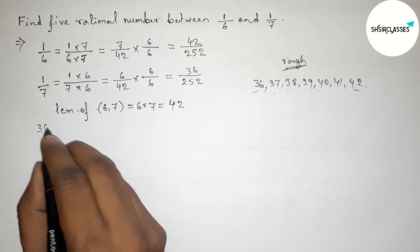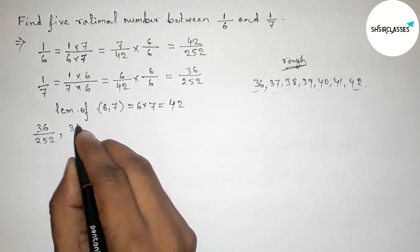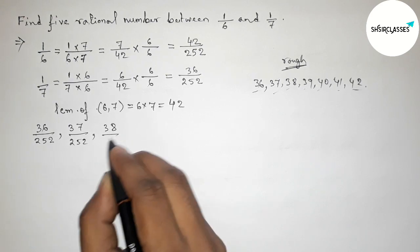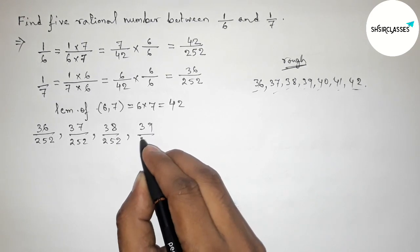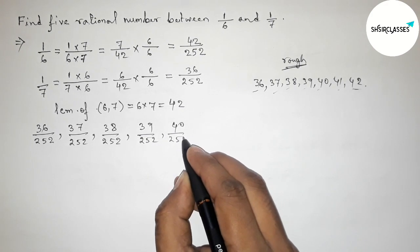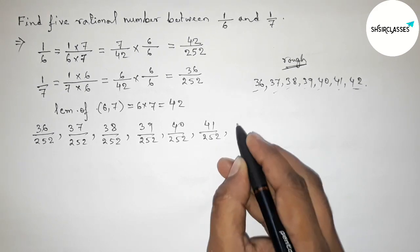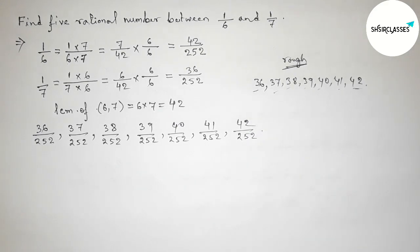First, write down all the rational numbers: 36/252, then 37/252, then 38/252, 39/252, 40/252, 41/252, and 42/252.